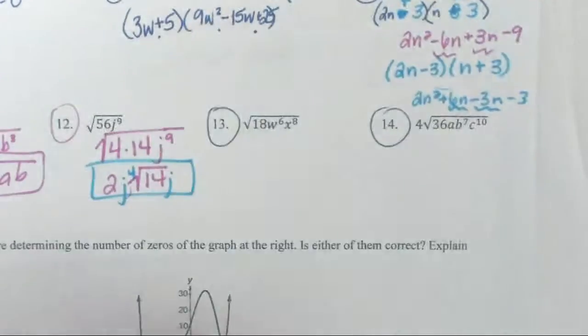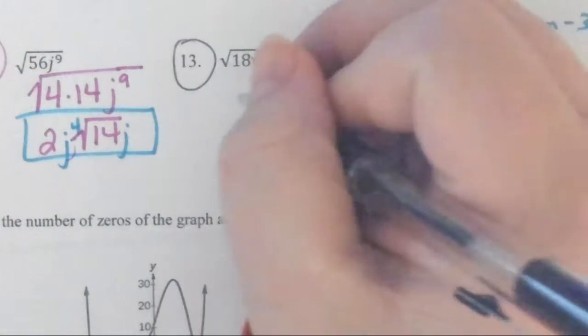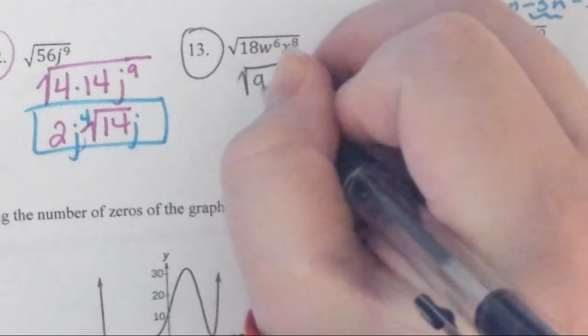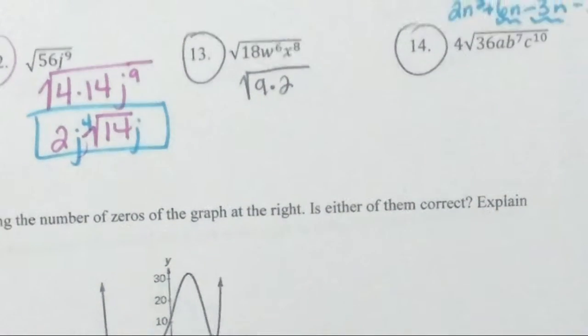Let's start with 13. I'm needing to break down 18. I need a perfect square times some number. What number should I pick? 9 and? Okay, so 9 and 2 give you 18. So what comes out?